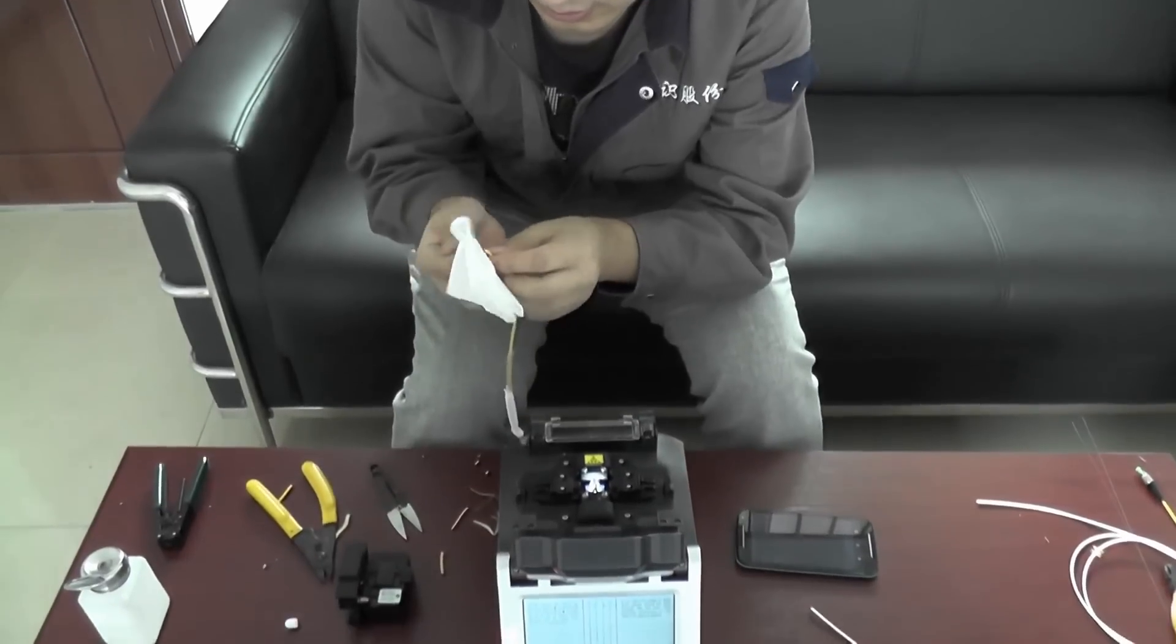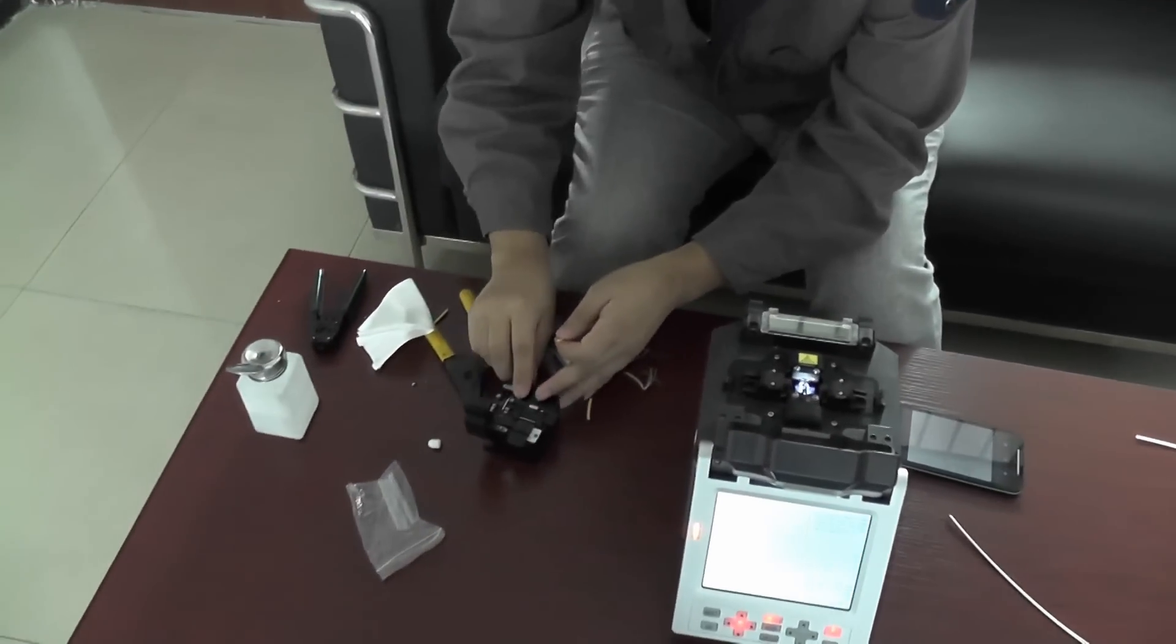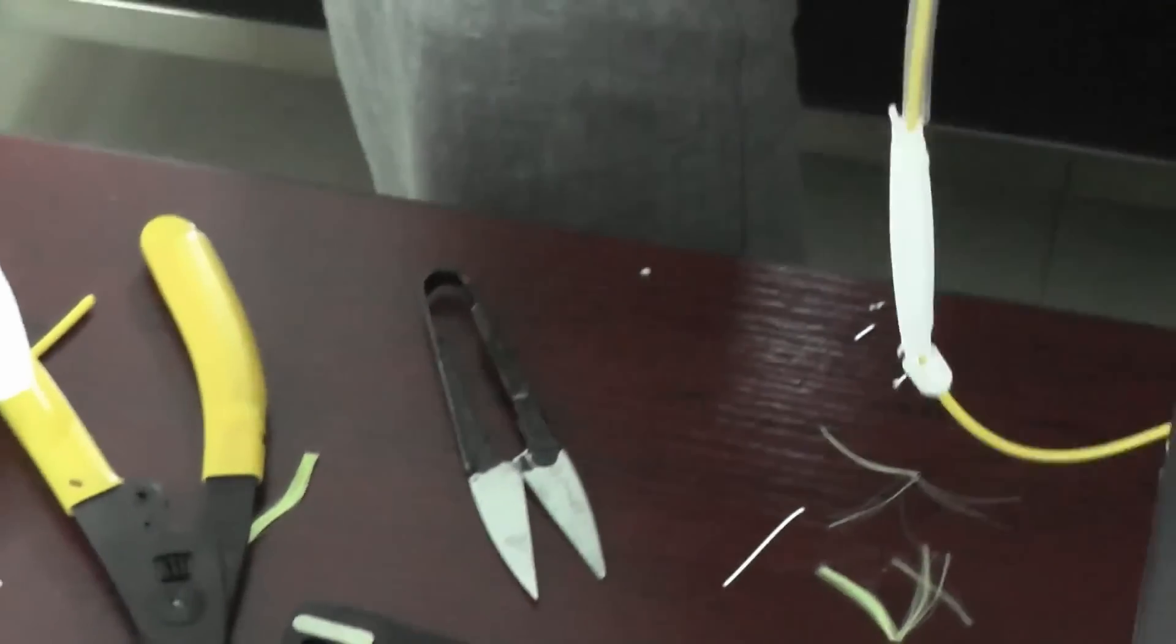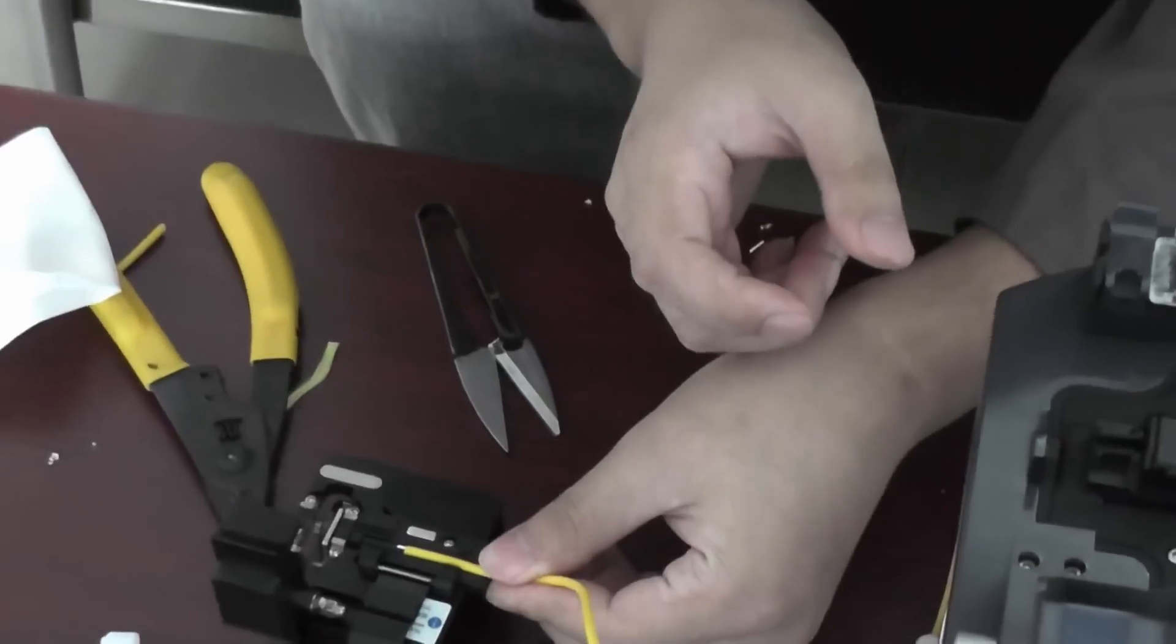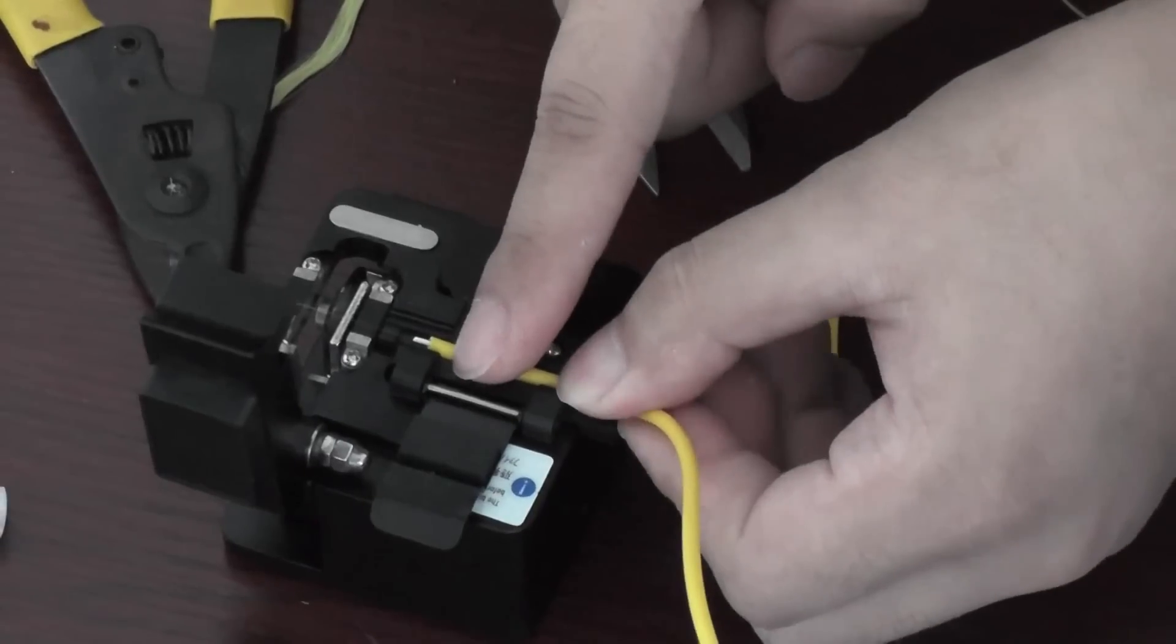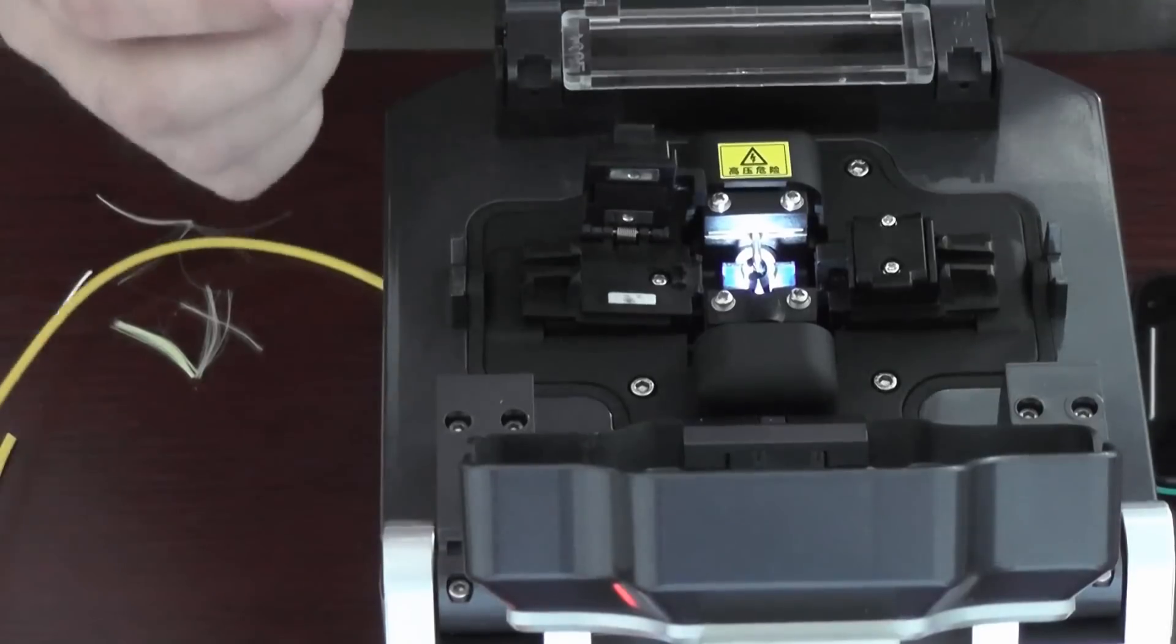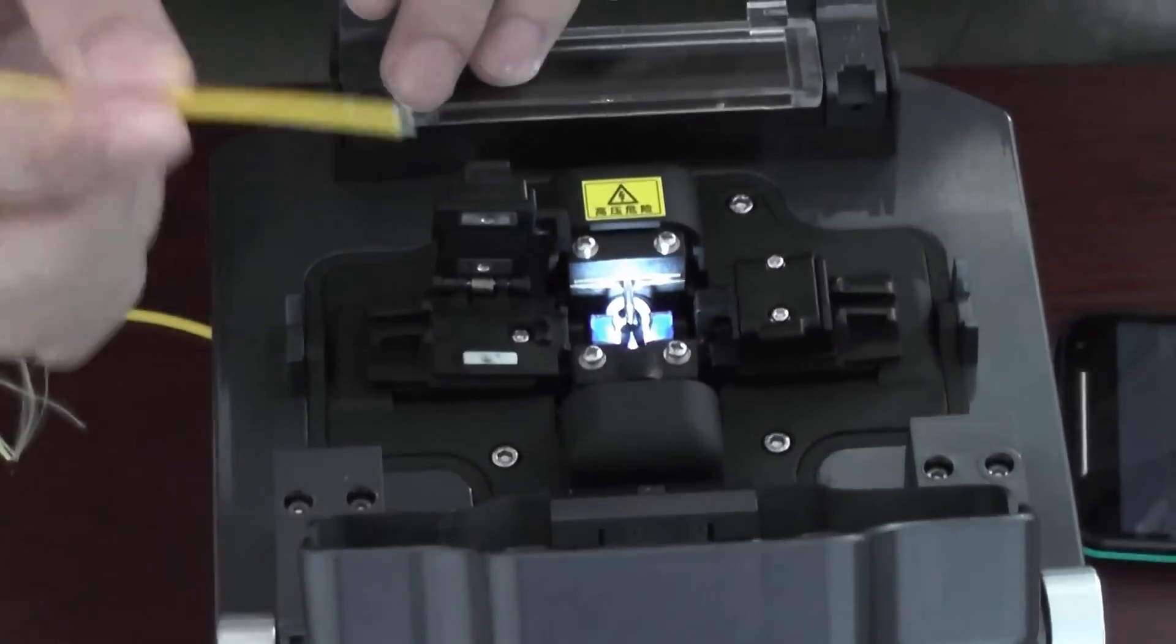Then use the alcohol to clean it. Now look at our fiber cleaver, there is the graduation on the cleaver. You see here, a graduation. So as a boundary from the yellow line, we put it between 15 to 18. You see, 15 to 18. About 17. Cut it carefully. You must put the fiber in the V groove, this is the blue eye V groove. But don't beyond the electrodes.